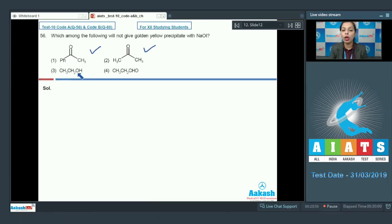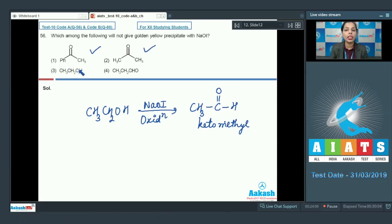Next we have CH3CH2 ethanol. In the presence of NaOI, there is the process of oxidation. Further it will react with NaOI to give you the yellow precipitate, so it will also show the same reaction. Further, if I talk about the fourth option, this is propanol. In this case there is no keto methyl group and it will not show the yellow precipitate formation, so fourth option becomes the correct option for this question.